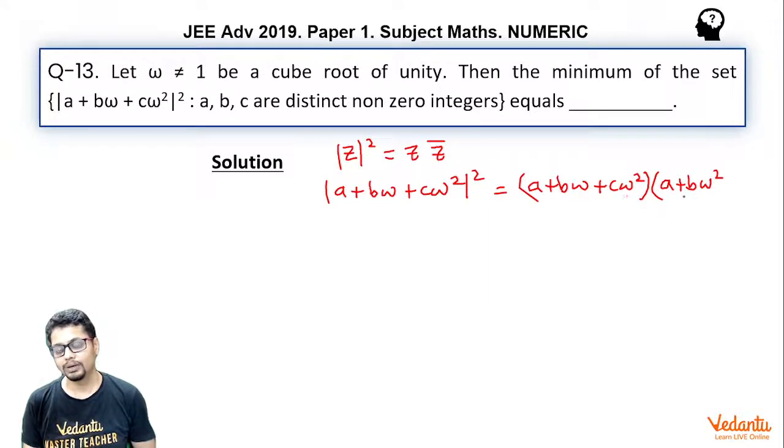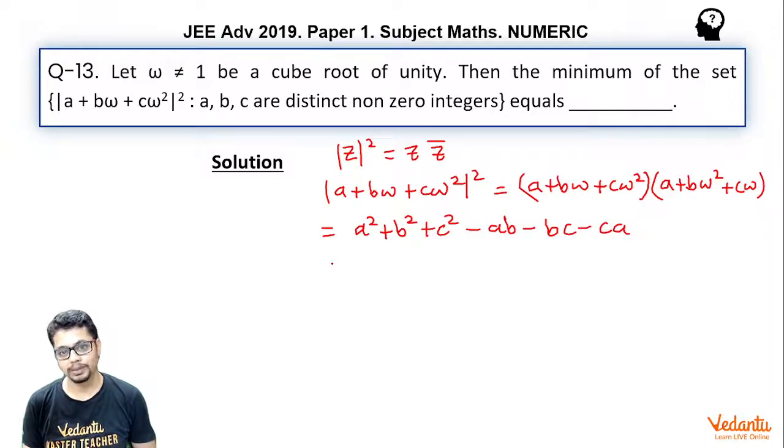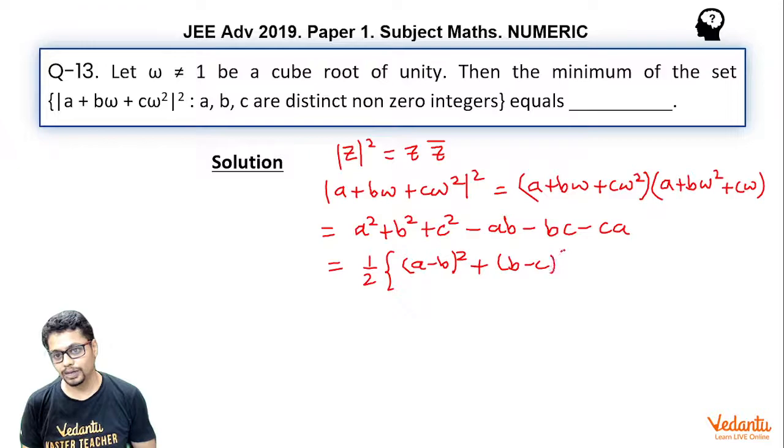Now as we expand it essentially becomes a² + b² + c² - ab - bc - ac. You just have to multiply term by term. So this essentially becomes ½[(a-b)² + (b-c)² + (c-a)²] and this is a very popular expression.